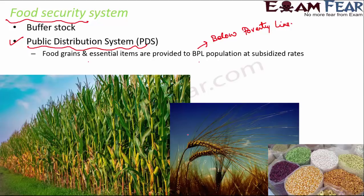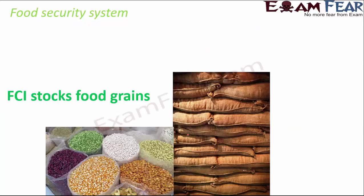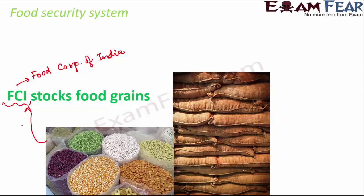Farmers in villages and agricultural areas grow the crops. There is a corporation called FCI — the Food Corporation of India. The function of FCI is to take food items from farmers at the Minimum Support Price, or MSP — the minimum possible price — and this MSP is decided by the government.